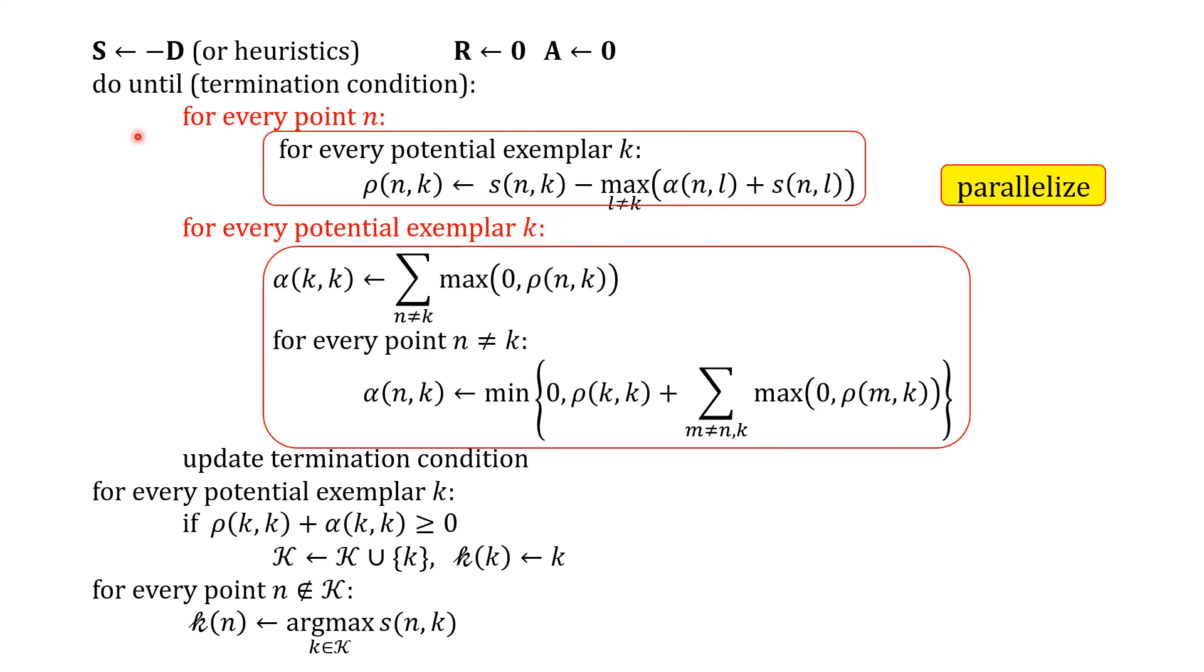Now note that this for loop and this for loop, they can be parallelized. All the points here do it in parallel, and here all potential exemplars, which are the points themselves, do these in parallel. And this can also be parallelized.